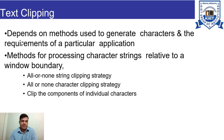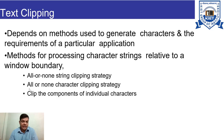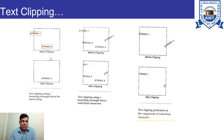Then we have text clipping. Text clipping involves performing clipping on text — that means on characters or strings. It depends on the methods used to generate characters and the requirements of a particular application, as well as methods for processing character strings relative to a window boundary. In text clipping we have three cases: first is all-or-none string clipping strategy, second is all-or-none character clipping strategy, and third is clipping the components of individual characters.